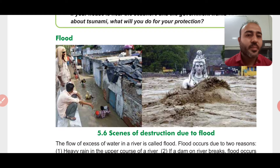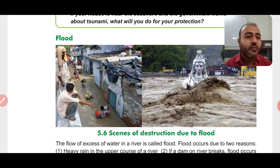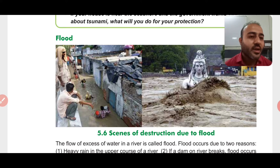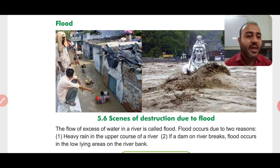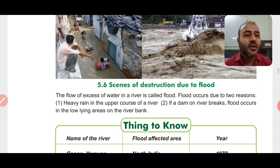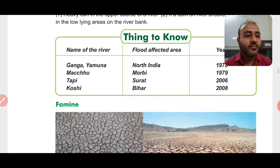The next topic is flood. The excessive flow of water in a river is called a flood. When there is a lot of rainfall, water accumulates in the river and overflows into nearby areas. Flood occurs due to two reasons: heavy rain in the upper course of a river, and if a dam on the river breaks, flood occurs in the low-lying areas on the river bank.